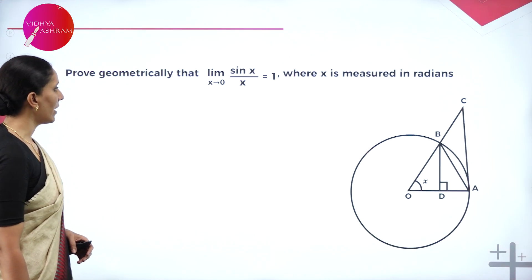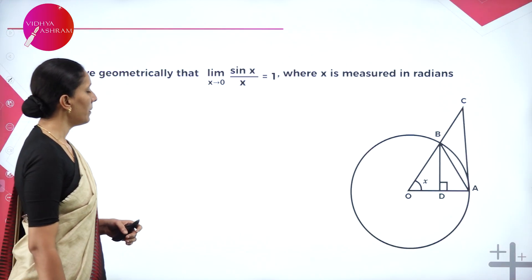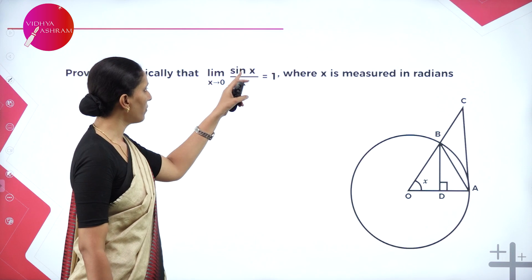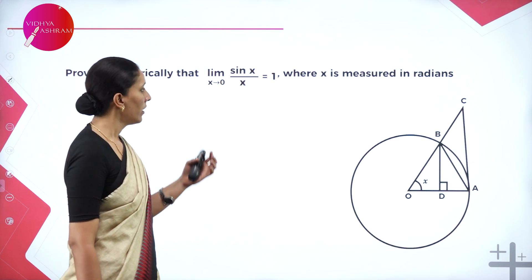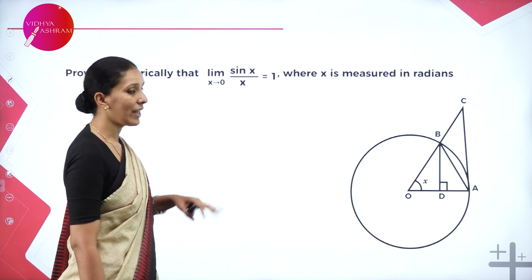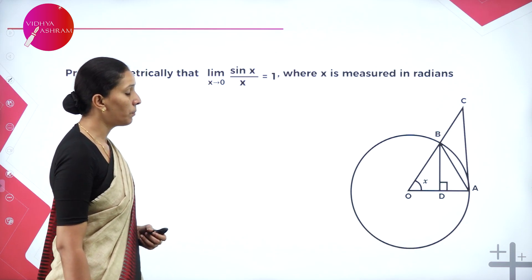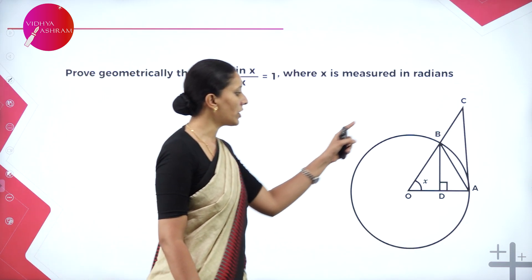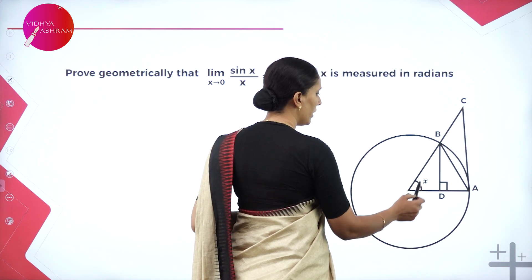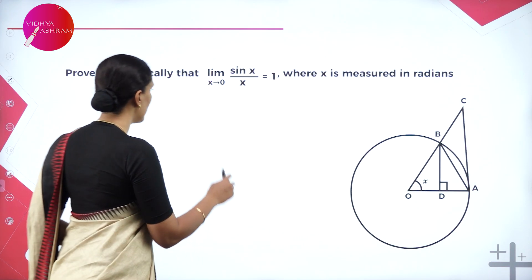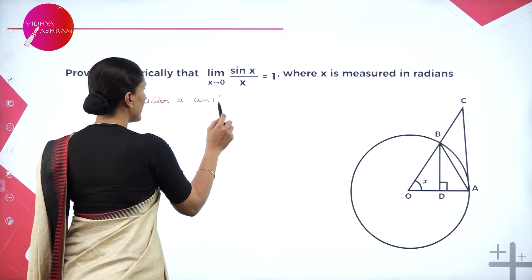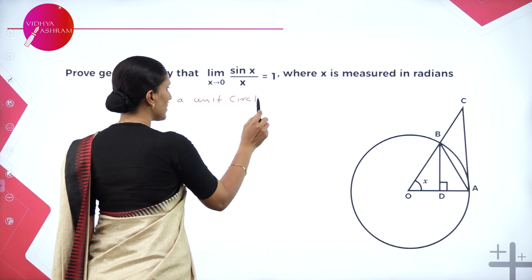Next we have a very important derivation: prove geometrically that the limit as X approaches 0 of sin X by X is equal to 1. This is an indeterminate form — sin 0 by 0 — and its final value will equal 1. We prove this with the help of the sandwich theorem. For the proof, we need a unit circle whose radius is OA, with angle AOB equal to X. Consider a unit circle, meaning the radius is 1 unit.